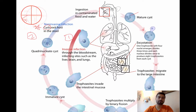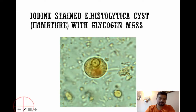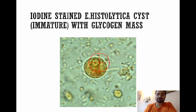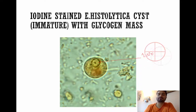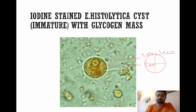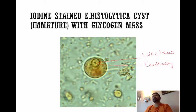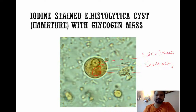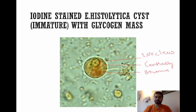Amoebiosis is a textbook example of a disease transmitted by the feco-oral route. In this microscopy image from the CDC, you can see an immature cyst with just one nucleus — it will grow three more, giving four total. The endosome inside the nucleus is centrally located, unlike many other entamoebas where it is peripherally located. There is also a glycogen mass stained brown by iodine stain inside the cyst. This is how an immature cyst of Entamoeba histolytica looks.